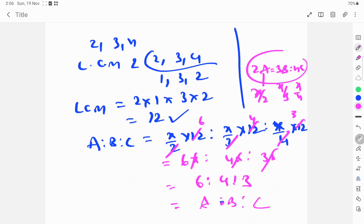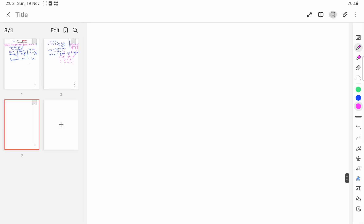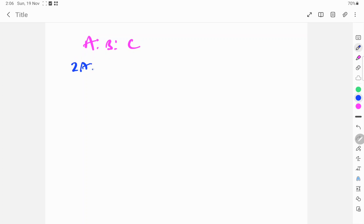This is called the general method. But now I will explain the shortcut method within one minute. A is to B is to C, according to the problem: 2A is to 3B is to 4C.